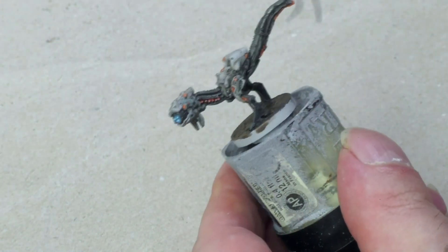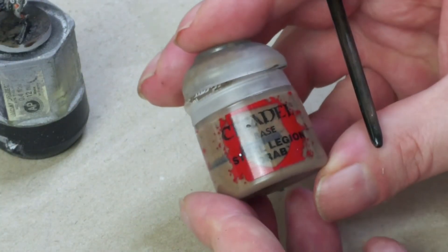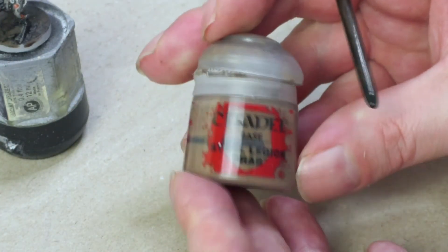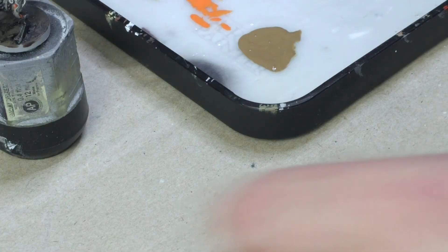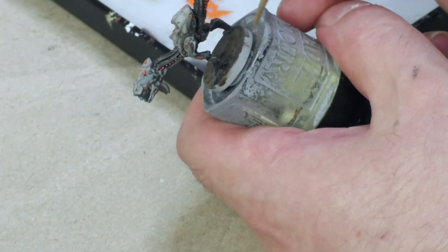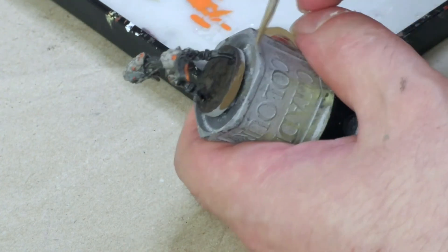We can use some of the drying time to paint the rim of the base. For that purpose, I'm using a yellowish brown paint. After its first coat will be dry, I'll apply a second one to achieve an even look without patches.